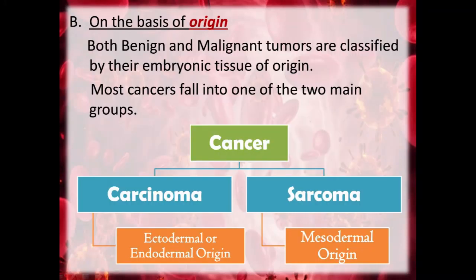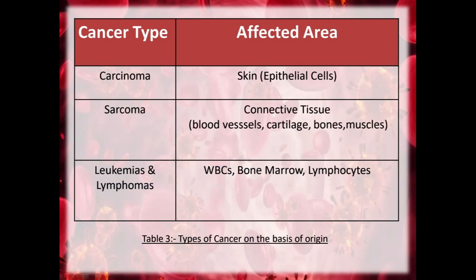On the basis of origin, we can divide both malignant and benign tumours based on their embryonic tissue of origin. Most cancers fall into one of two main groups: carcinoma and sarcoma. Carcinomas are usually ectodermal or endodermal in origin — they affect the skin and epithelial cells. Sarcomas are mesodermal in origin and affect connective tissues like blood vessels, cartilage, bones, and muscles. Leukemia and lymphoma affect the white blood cells, bone marrow, and lymphocytes.